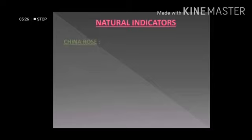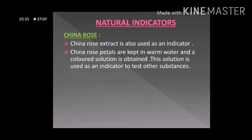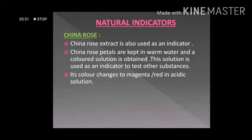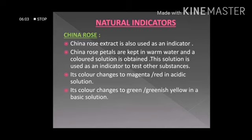Turmeric solution changes its color to brick red in the presence of a basic solution. Another important natural indicator is china rose. China rose is dipped in warm water and left for some time, and we obtain a colored solution from it. If the color of the china rose solution changes to red, the liquid is an acid. And if the color changes to green, the solution is a base.